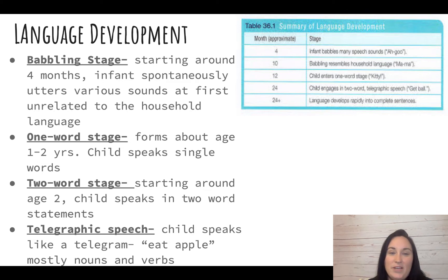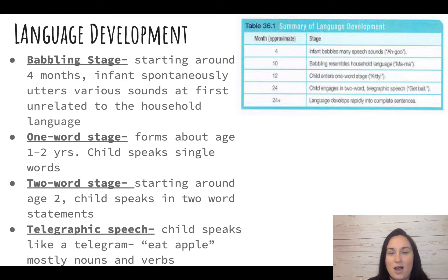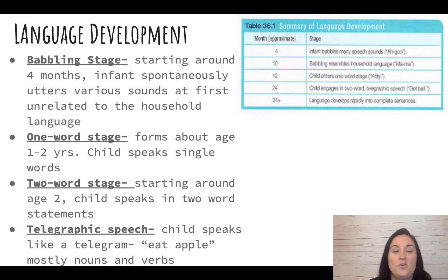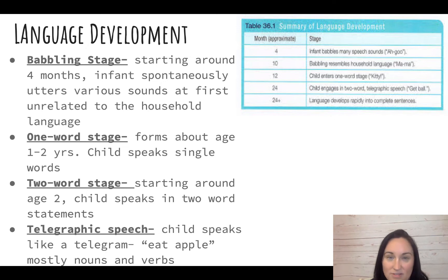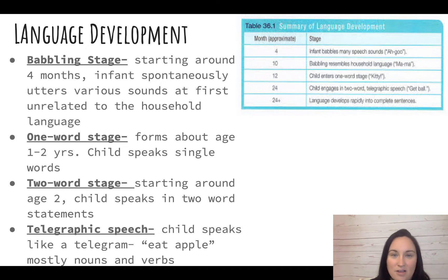Language development. Starting around four months old, you'll start to hear a baby making vocalizations — ooh, ah, goo goo, all those kinds of sounds. They're not related to the language the baby is born into; it's just their first vocalizing. At the one-word stage, which forms at about one to two years old, the child speaks single words: mama, cat, dog, etc.